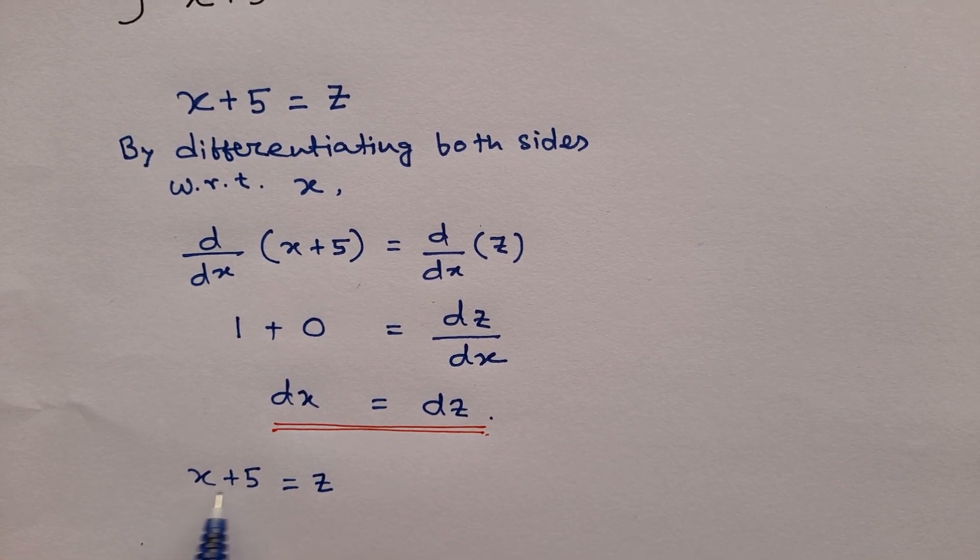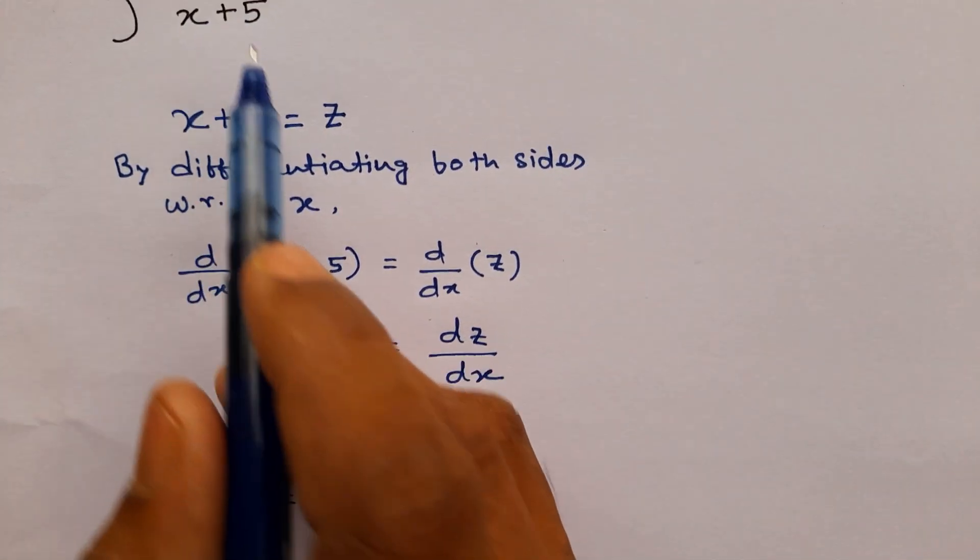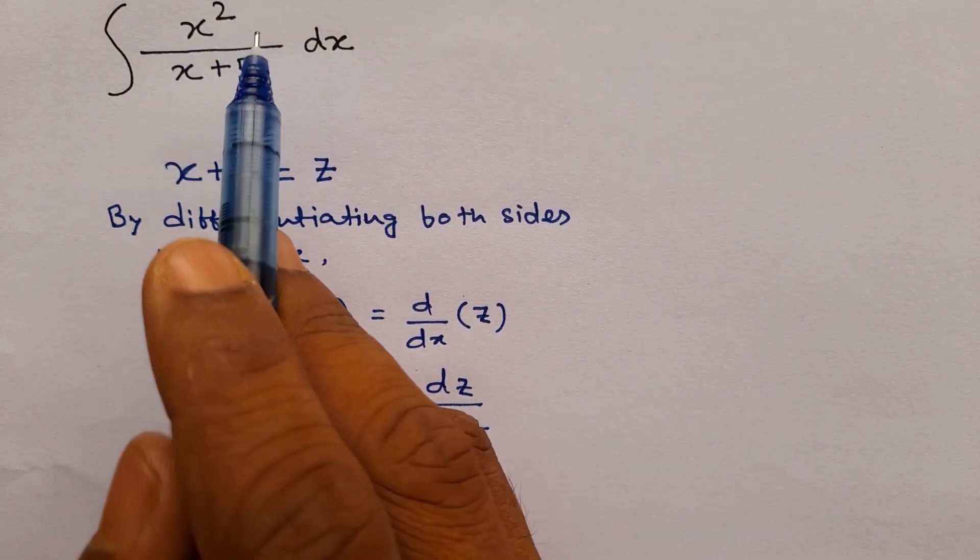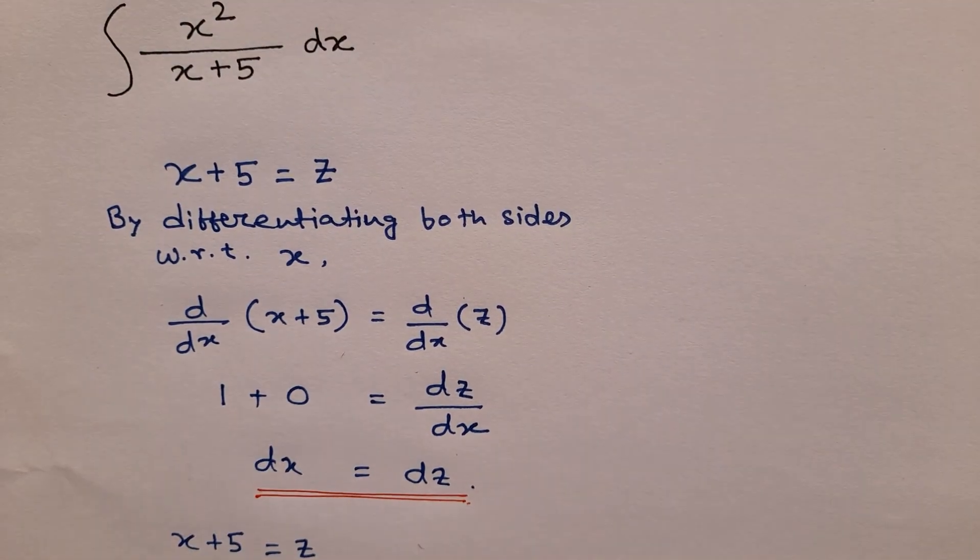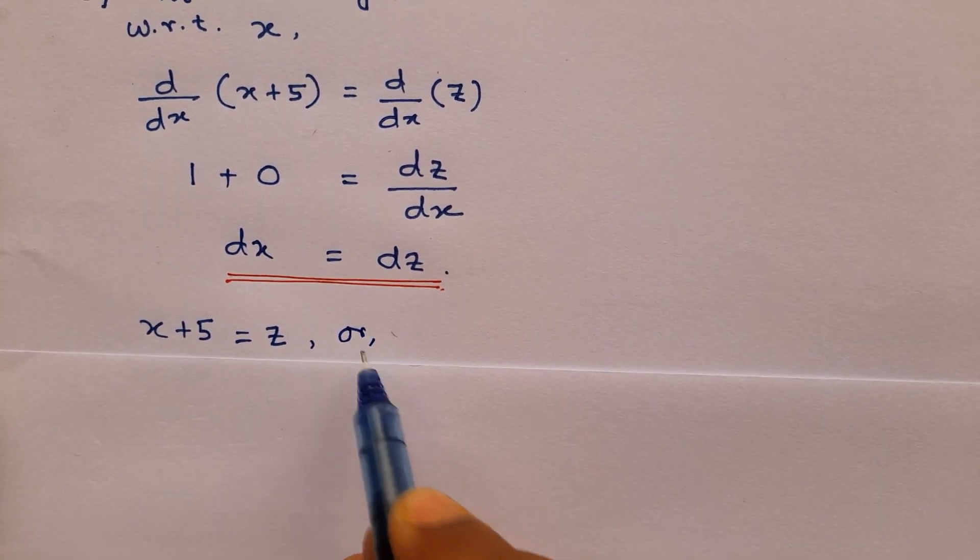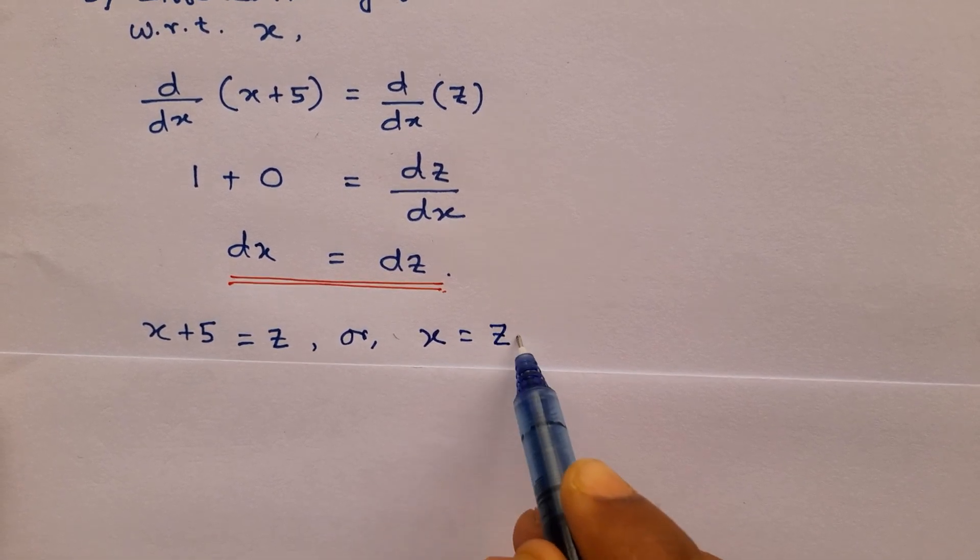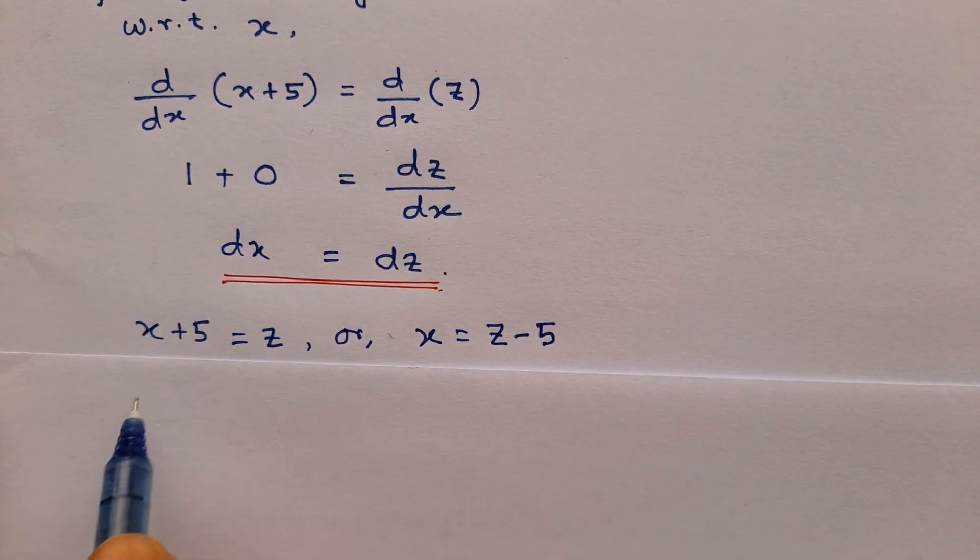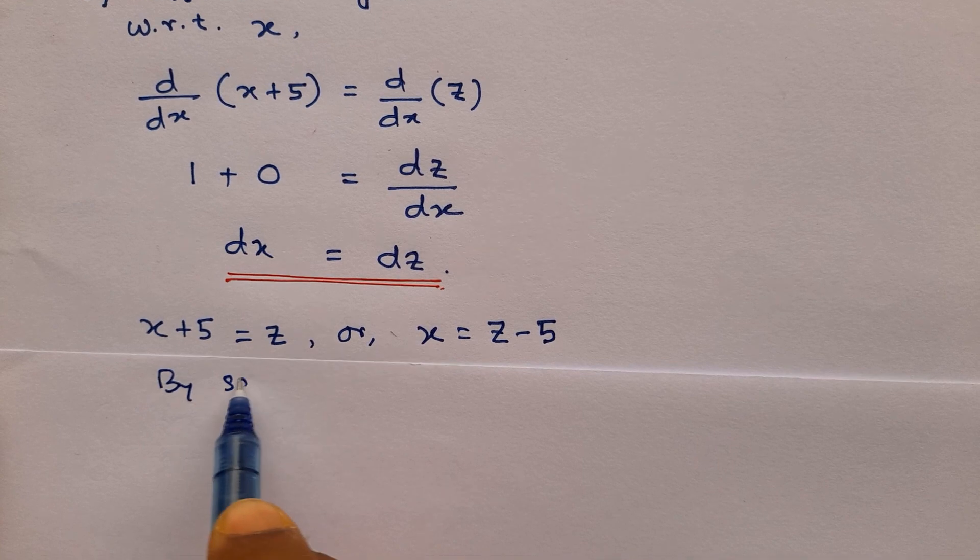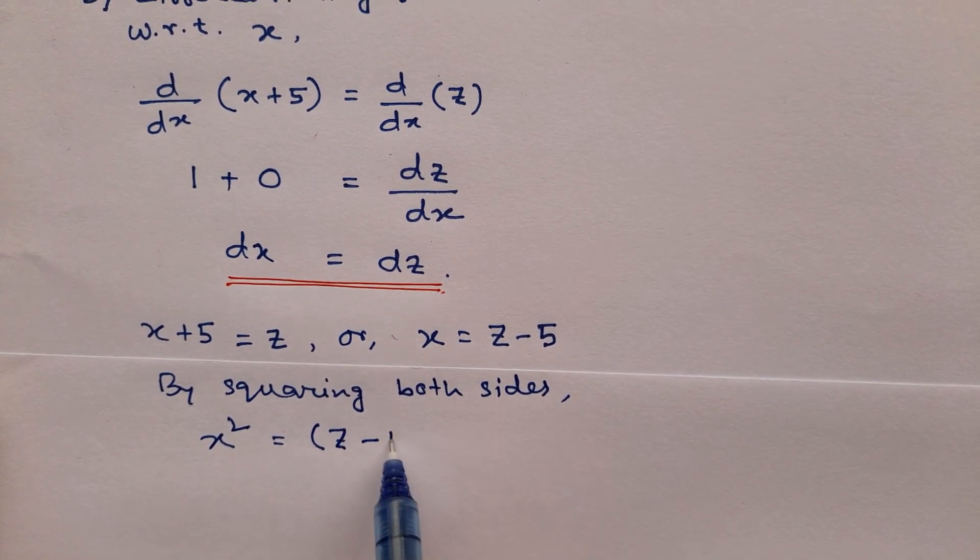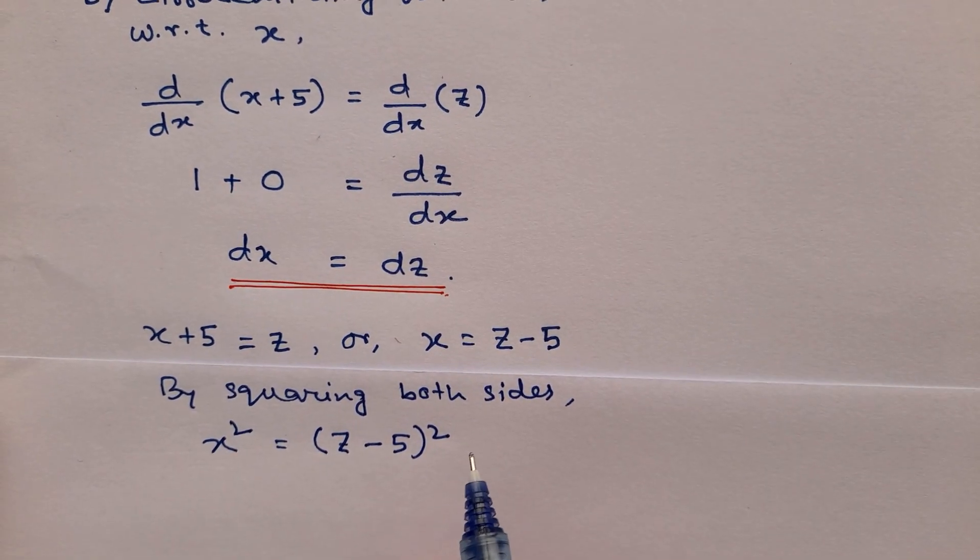One more thing is x plus 5 equals z and in the numerator there is x squared. So we have to find the value of x squared in terms of z. From here we can say that x equals z minus 5. By squaring both sides we get x squared equals z minus 5 whole square.